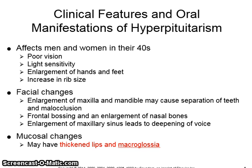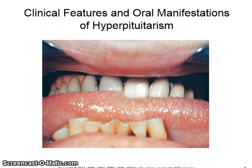Clinical features and oral manifestations of hyperpituitarism: it affects men and women in their 40s. It includes facial changes such as enlargement of the maxilla and mandible, which can cause separation of teeth and malocclusion. Enlargement of the nasal bones and the maxillary sinus, which leads to deepening of the voice. Mucosal changes can show up as thicker lips and larger tongues. This is a picture showing macroglossia.